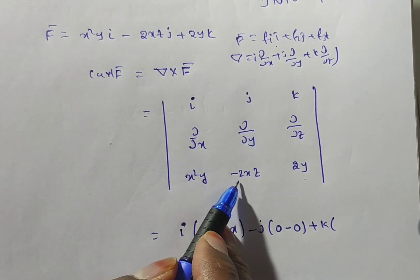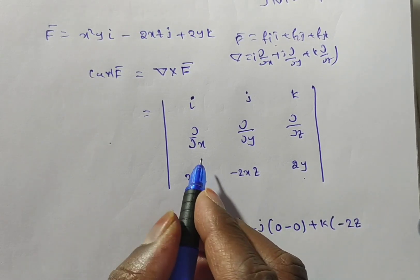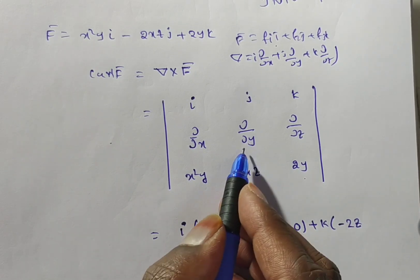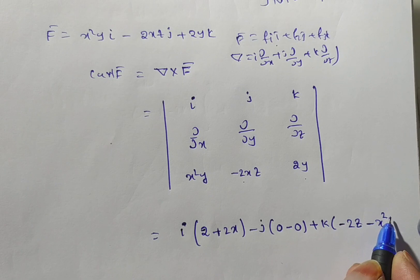Plus k times, now with respect to x do it, what you will get here, minus 2z. Now with respect to y do it here, with respect to y is nothing but x square, so minus x square.